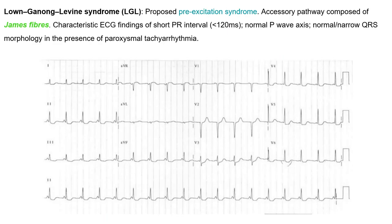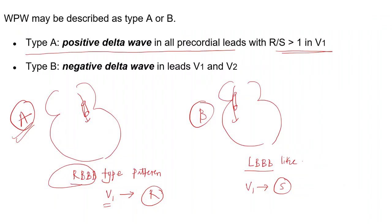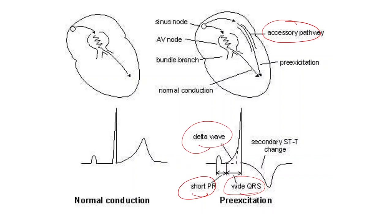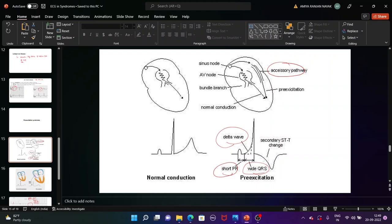In Lown-Ganong-Levine syndrome, the accessory pathway is the James Fibers, which connect to the Bundle of His. Therefore the QRS complex will be narrow with no delta wave, but short PR will be present. You can see on the ECG there is a P wave, then directly the QRS complex with no PR segment, no delta wave, and normal QRS duration. That is all about some of the syndromes. Next, we will be seeing ECGs in MI and AV blocks.